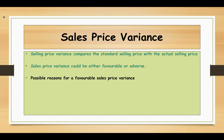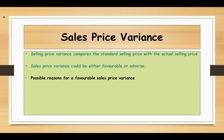Now we'll see the possible reasons for a favorable sales price variance: product differentiation through better quality products or brand loyalty; aggressive marketing campaigns and sales promotions; fewer competitors in the market; pricing strategies such as penetration pricing; or no substitutes available in the market, allowing companies to charge higher prices.